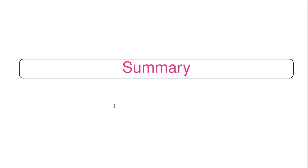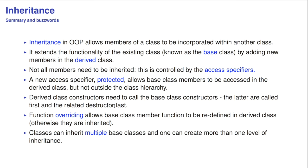Now, let's summarize. What we've done today, we've looked at inheritance, which allows members of a class to be incorporated within another class. It extends the functionality of the existing class, which we should call the base class, by adding new members into the derived class. Not all members need to be inherited. This is controlled by so-called access specifiers, and a new access specifier called protected allows base class members to be accessed in the derived class, but not outside the class hierarchy. Derived class constructors need to call the base class constructors, the latter called first and the related destructor last. Function overriding allows base class member functions to be redefined in derived classes, otherwise they are just inherited. Classes can inherit multiple base classes, and one can create more than one level of inheritance. And that's it for today.